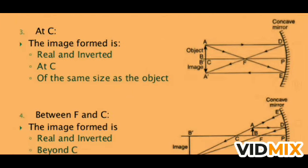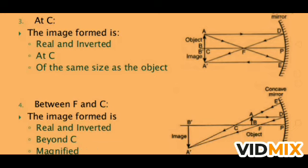Next: when the object is at C. Light rays go parallel to the principal axis and pass through the focus; the other rays go to C. The image formed is real, inverted, at C, and of the same size as the object. These are the properties of images formed by the concave mirror when the object is at C.